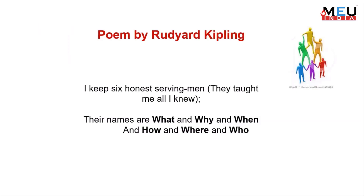This is a poem by Rudyard Kipling. If you look at the poem, the whole gist of reflection is in it: 'I keep six honest serving men, and they taught me all I knew. And their names are What, and Why, and When, and How, and Where, and Who.' The whole gist of reflection is put in this Rudyard Kipling poem.